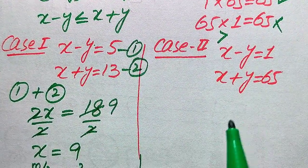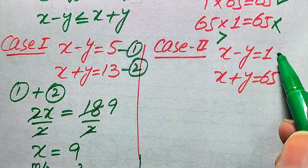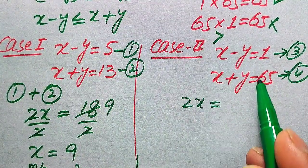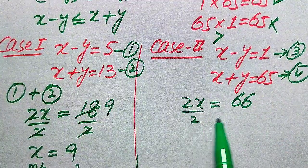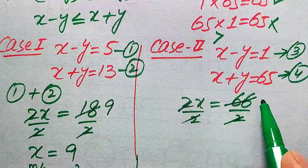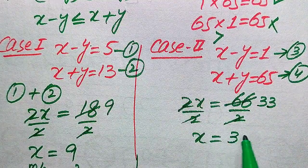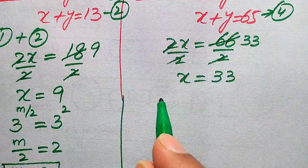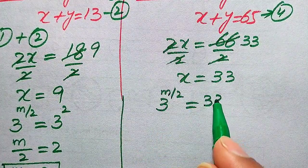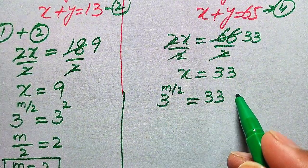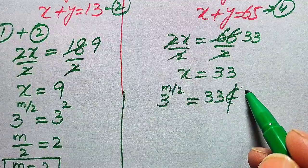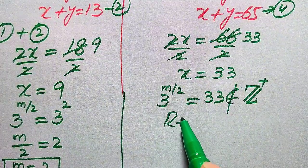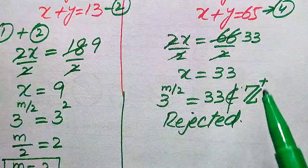Now we solve Case 2. We call x minus y = 1 equation 3 and x plus y = 65 equation 4. Adding these two, we get 2x equals 1 plus 65, which is 66. Dividing by 2, x equals 33. Back-substituting, 3 to the power of m over 2 equals 33 — this does not give a positive integer value of m, so we reject this case.